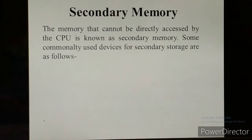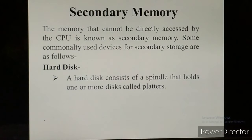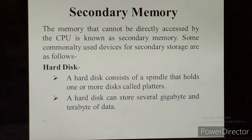Some commonly used secondary memory devices: Hard disk — the hard disk is the main secondary storage device. It consists of a spindle that holds one or more disks called platters. It is fixed inside the CPU. Hard disk can store several gigabytes and terabytes of data; nowadays hard disks are available to store up to 5 TB of data.